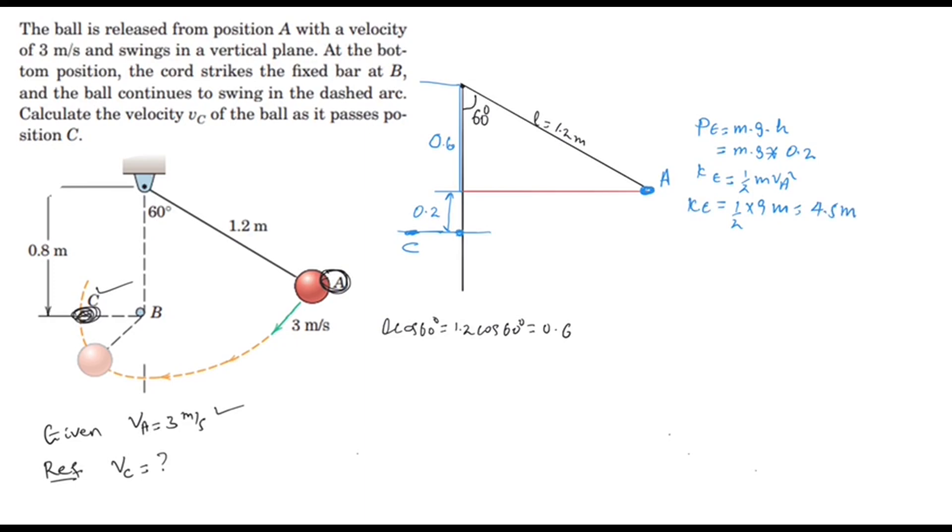The energy at point C - in this case we don't have any potential energy, so the potential energy will be zero because there is no elevation. The kinetic energy will become half M vC squared.